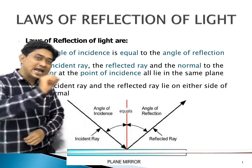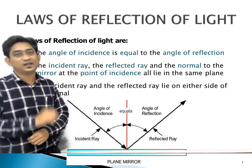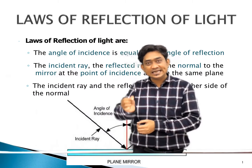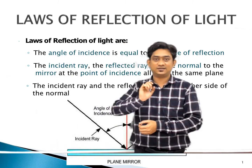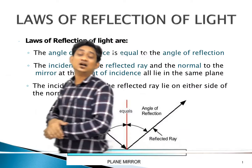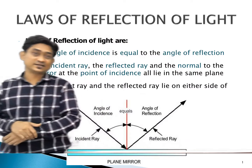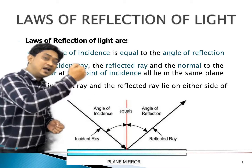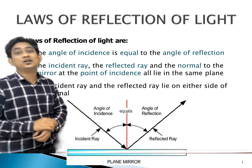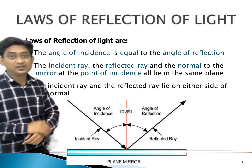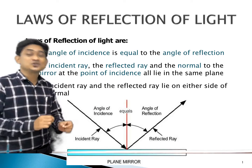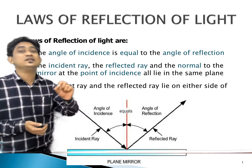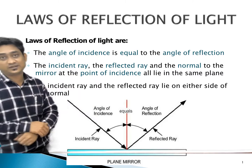Now, what is the angle of incidence? The angle between the incident ray and the normal is called the angle of incidence. And the angle between the reflected ray and the normal is called the angle of reflection. According to the laws of reflection, the angle of incidence is always equal to the angle of reflection.